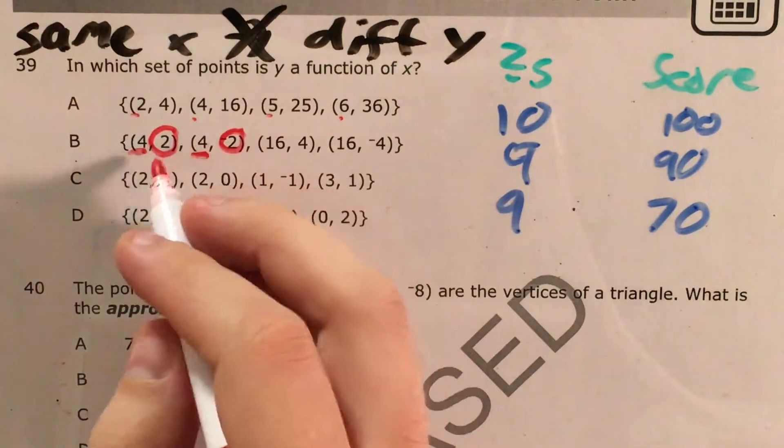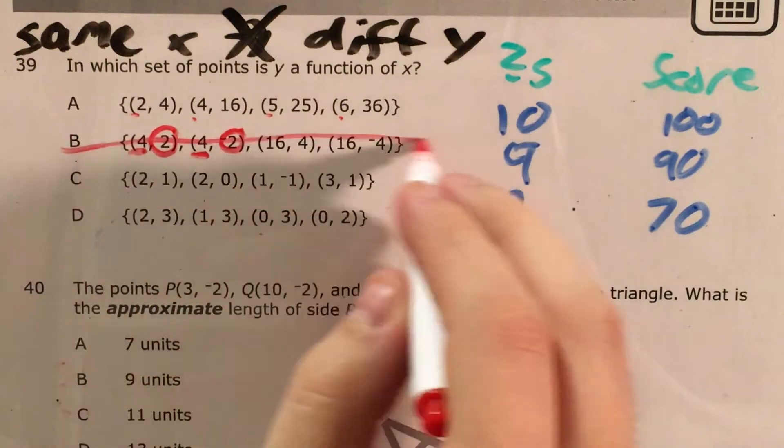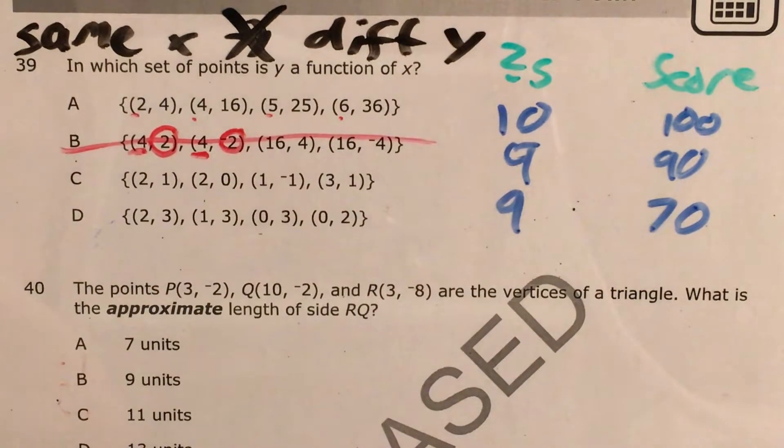The same x is giving us different y's. The same number of questions right is giving us a different score. And that's what we don't want. So B is not a function and not our answer.